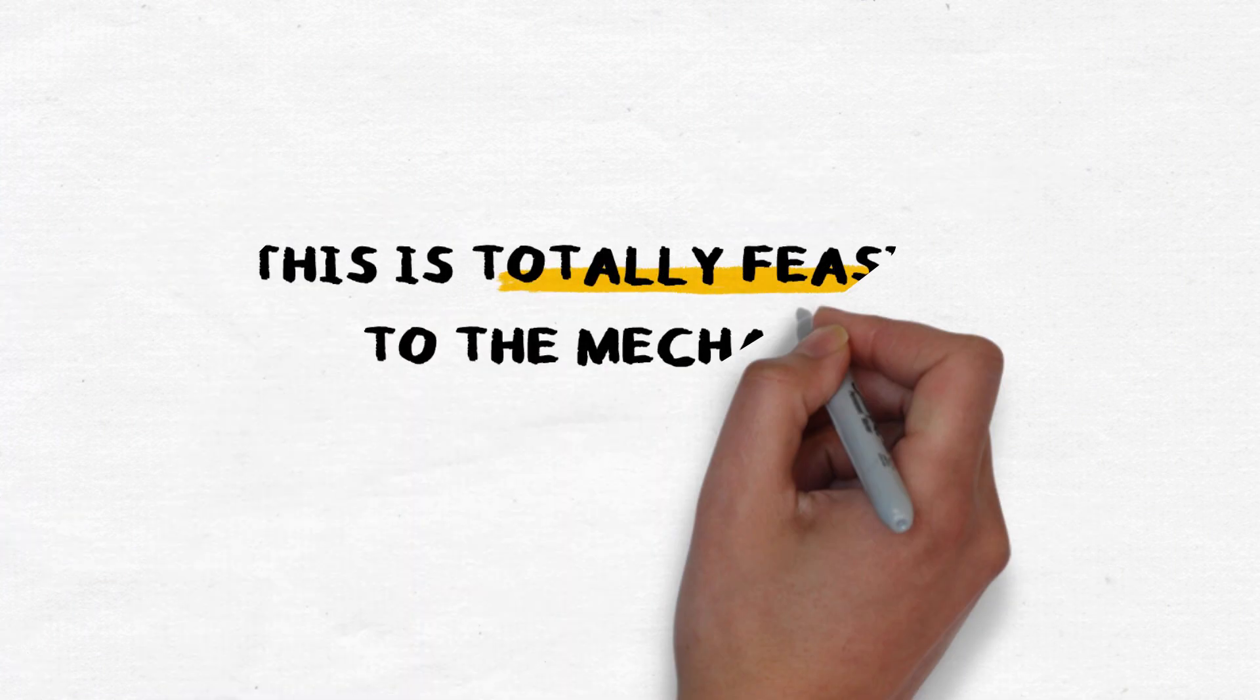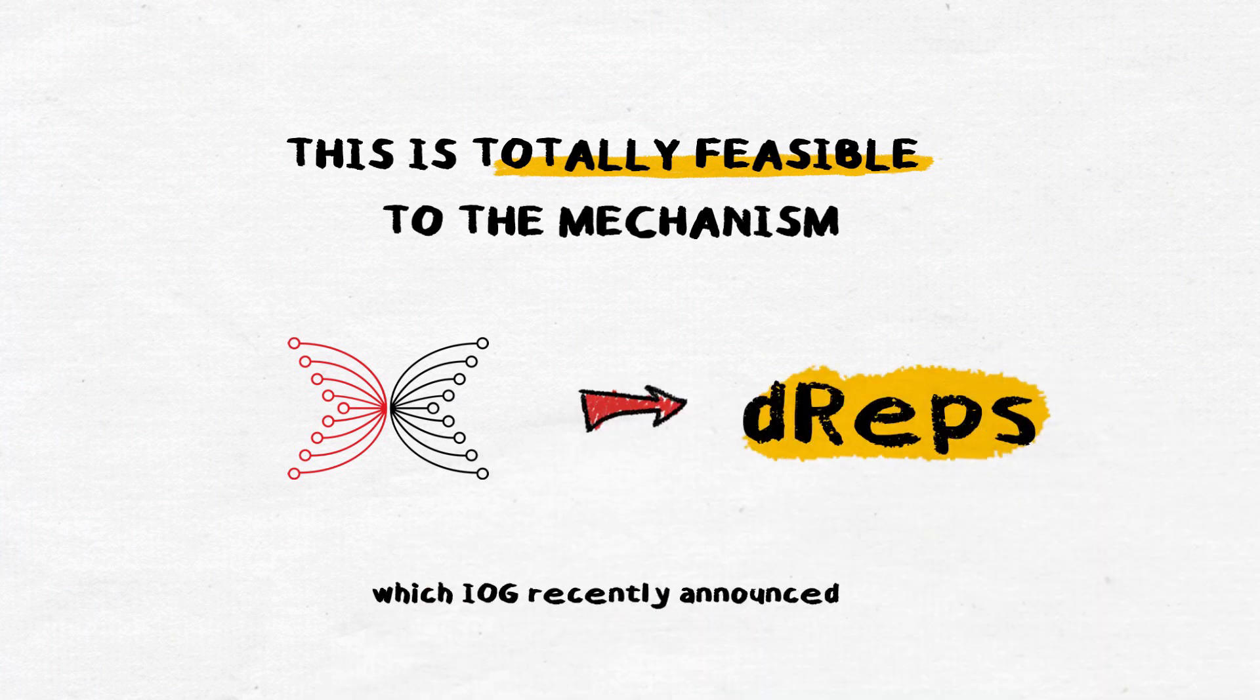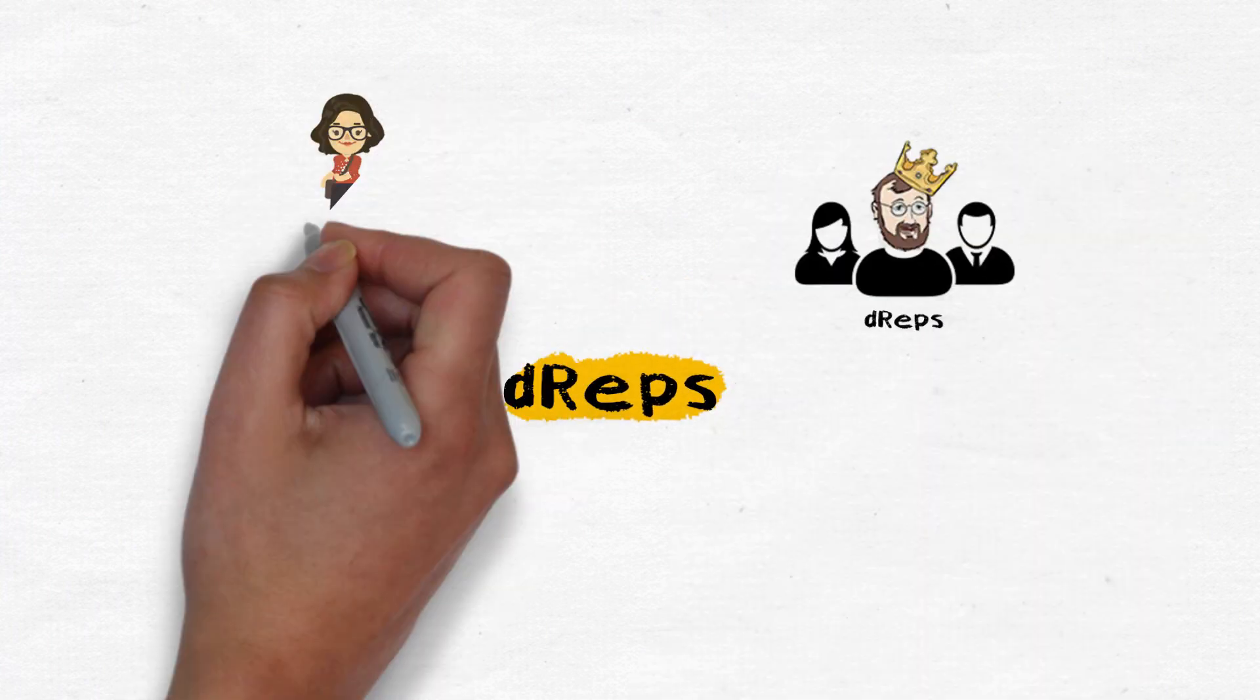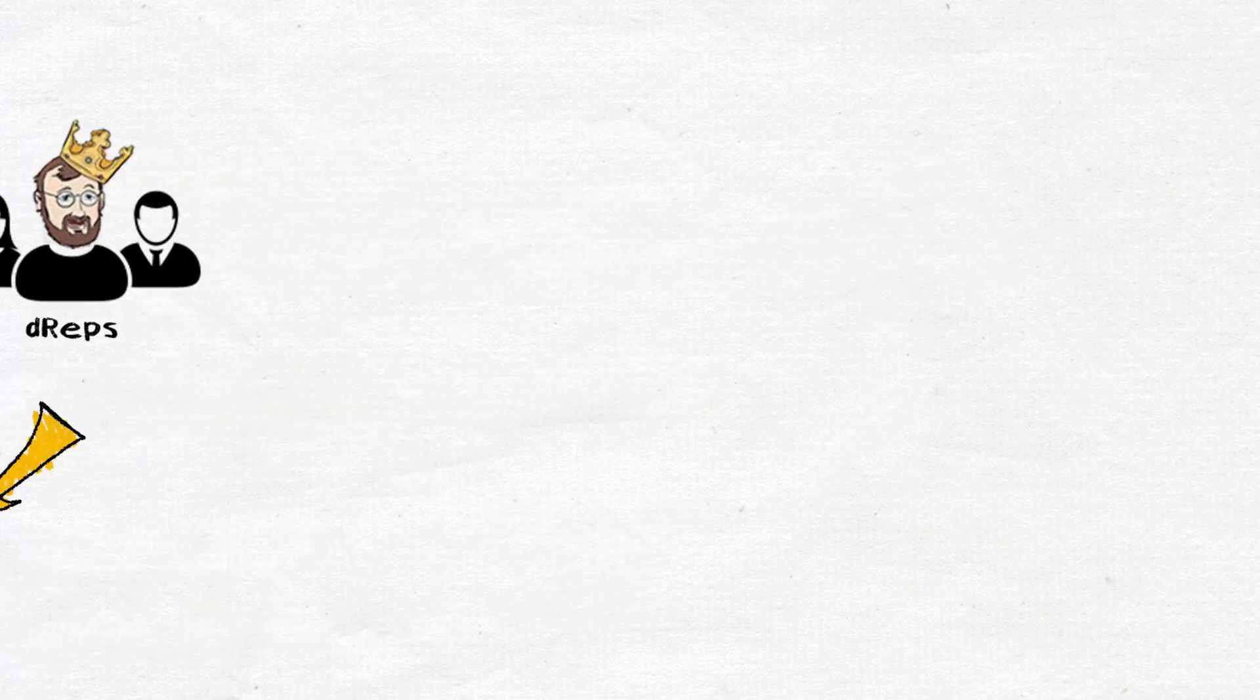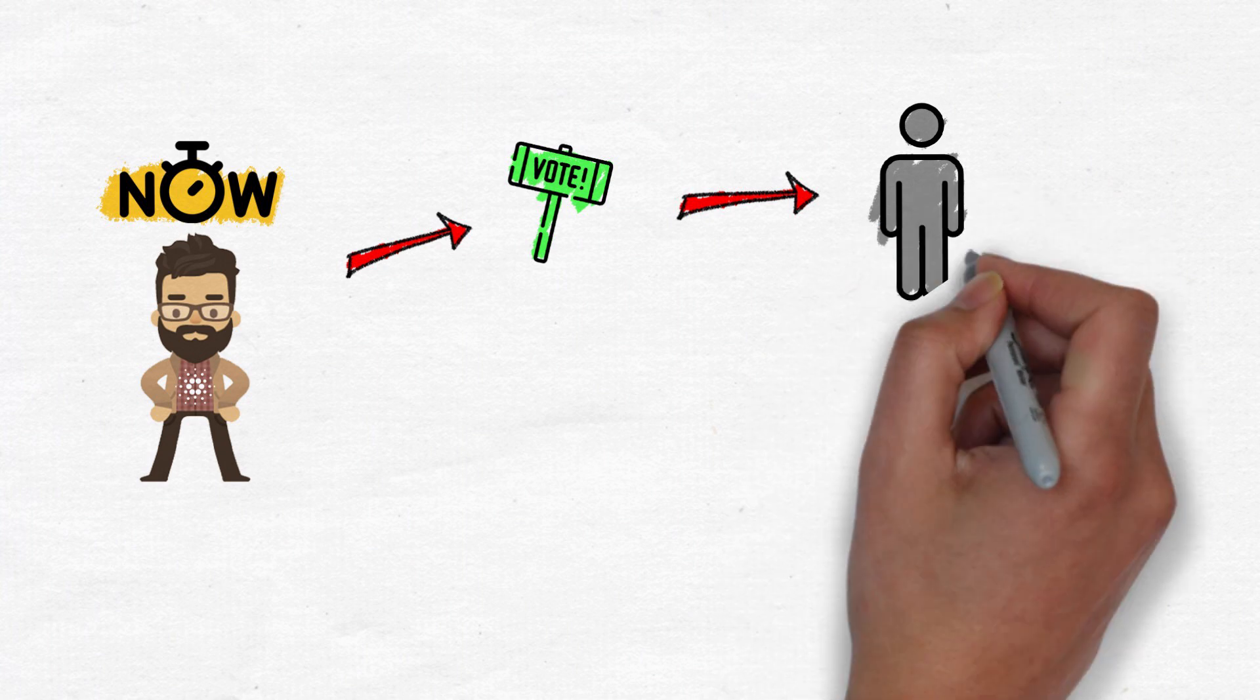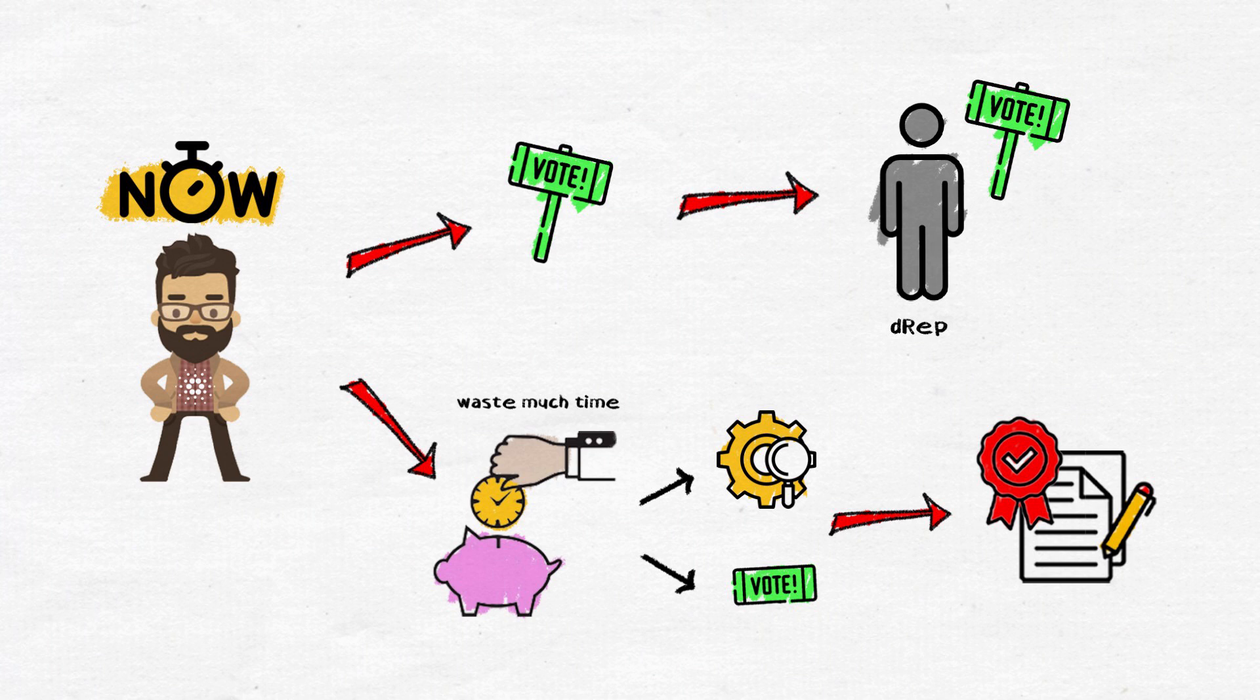This is totally feasible with the mechanism that IOG recently announced, DREPs. Delegated representatives, or DREPs, will represent to vote for the projects on behalf of ADA holders who chose to delegate their votes. The DREPs mechanism allows voters to vote directly on the proposal or delegate their vote to DREPs. From now on, you just need to delegate your vote to DREPs. DREPs will help you analyze and then vote for the high-quality projects.